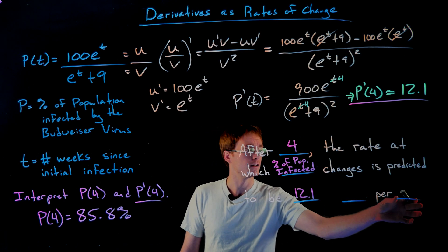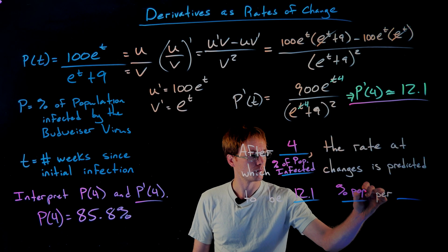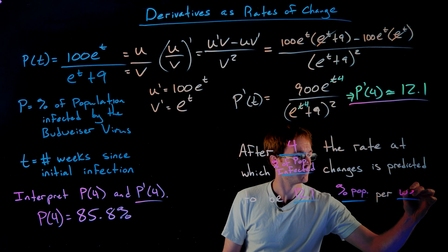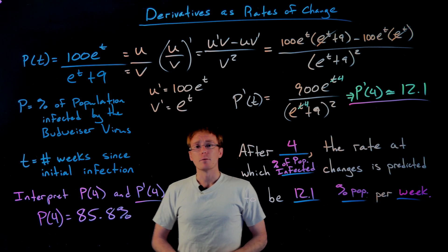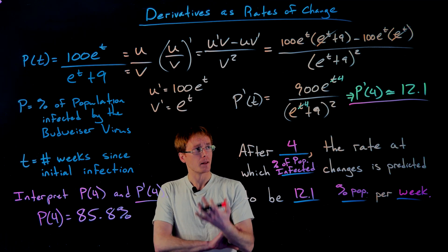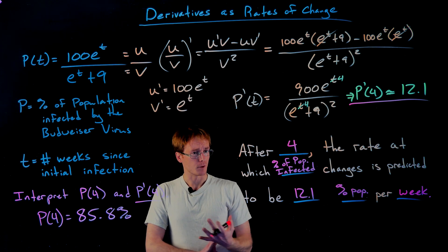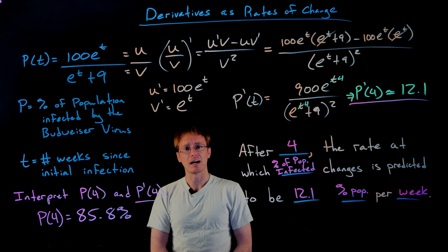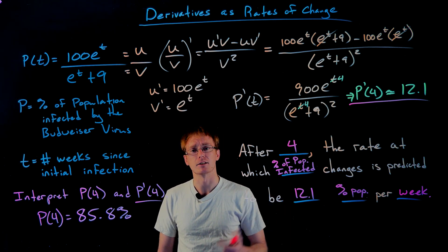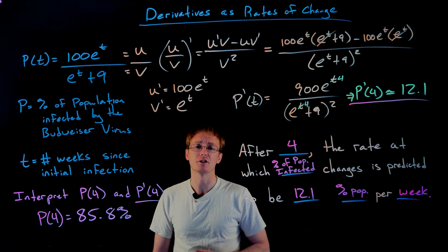The units of this rate of change are the units of the function divided by the units of the input. Our function's units are percent of the population and the units of t are weeks — so the units are percent per week. Since our derivative is positive, we know it's increasing. If our derivative had been negative, that would tell us the rate of change of the percent infected is actually decreasing.